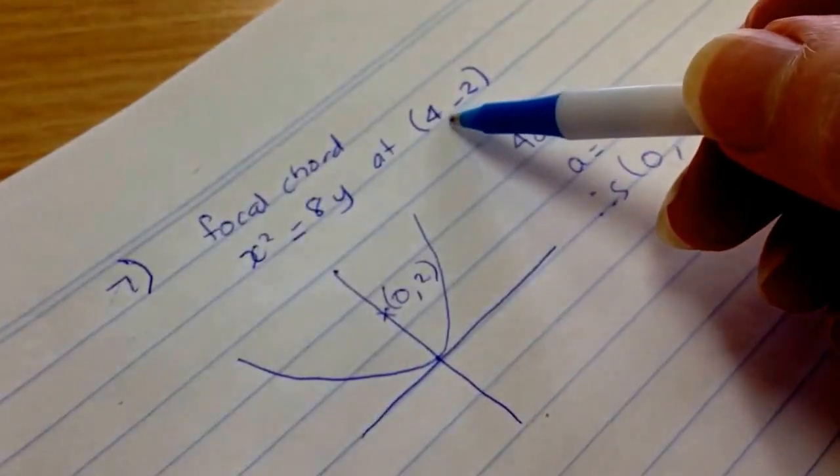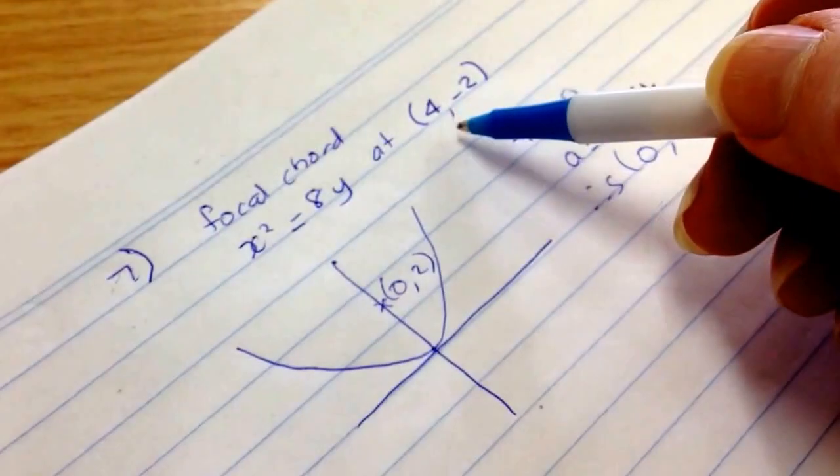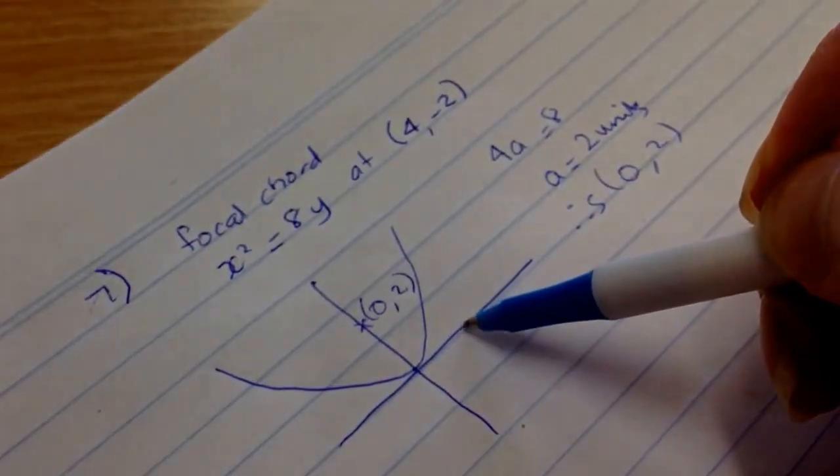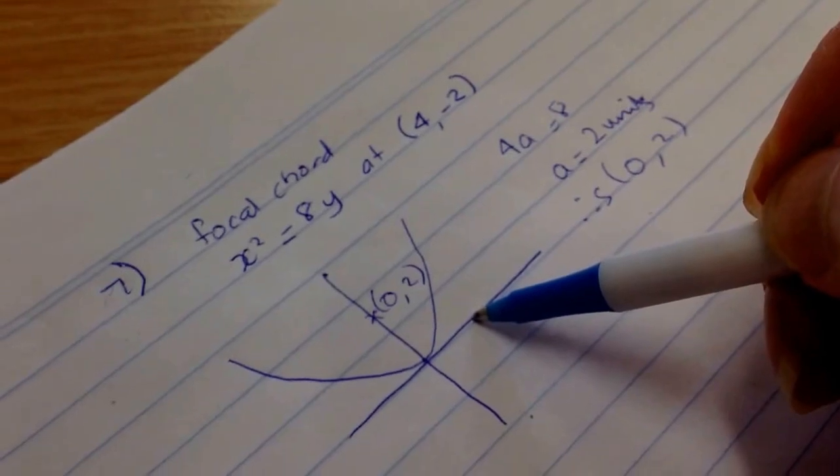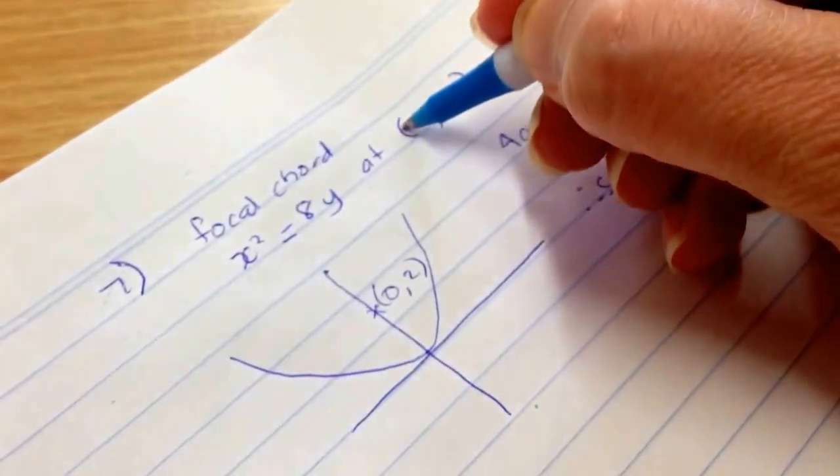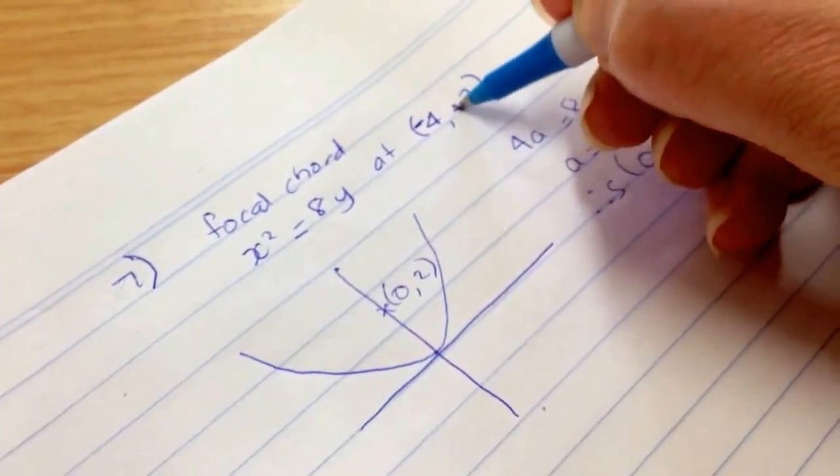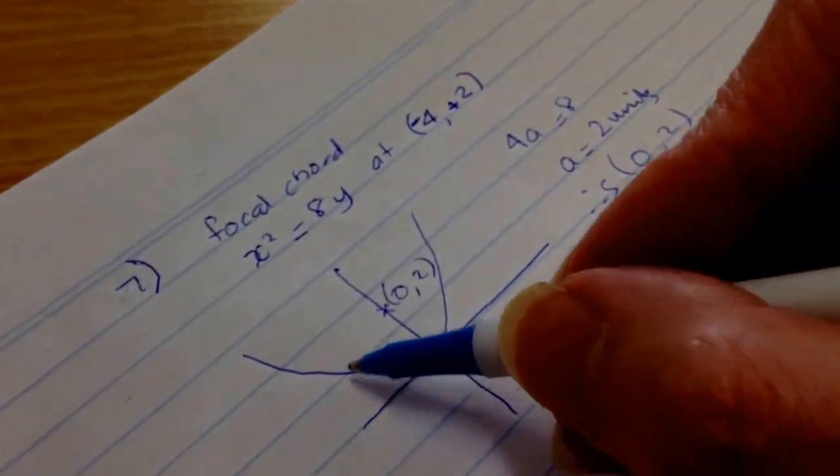And it goes through the point 4 minus 2. So, oh sorry, that's minus 4, 2. I thought there was something wrong there. Minus 4, 2. Yes, minus 4, 2, that's the question.